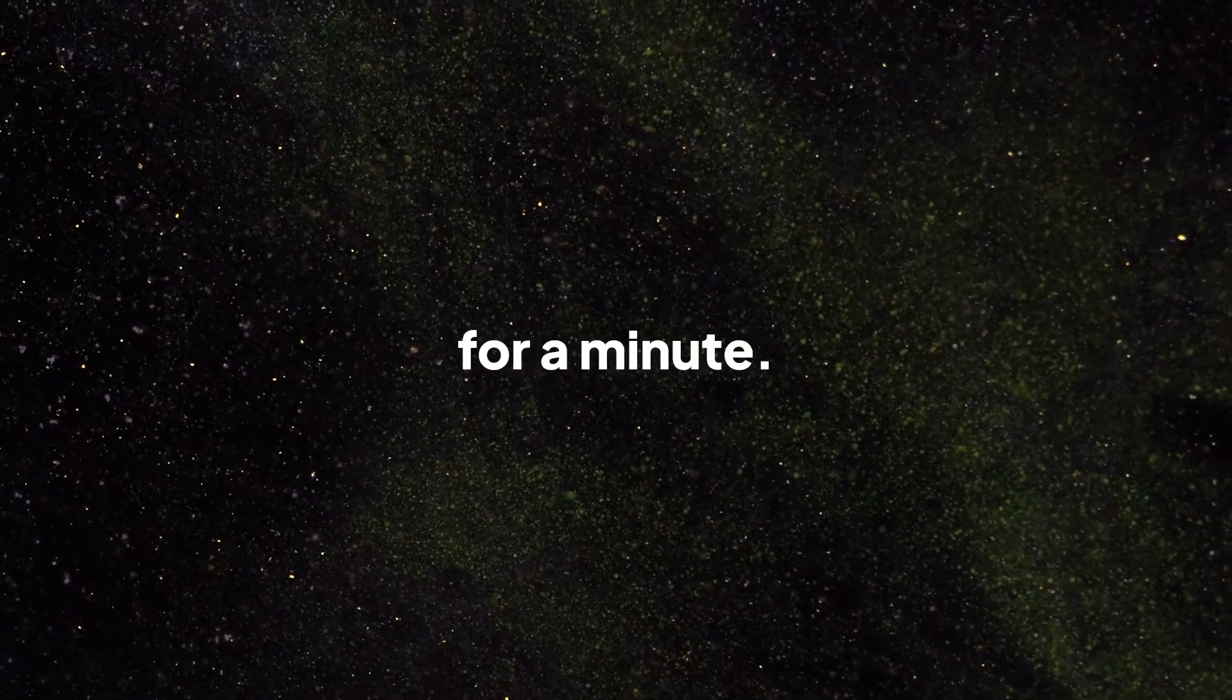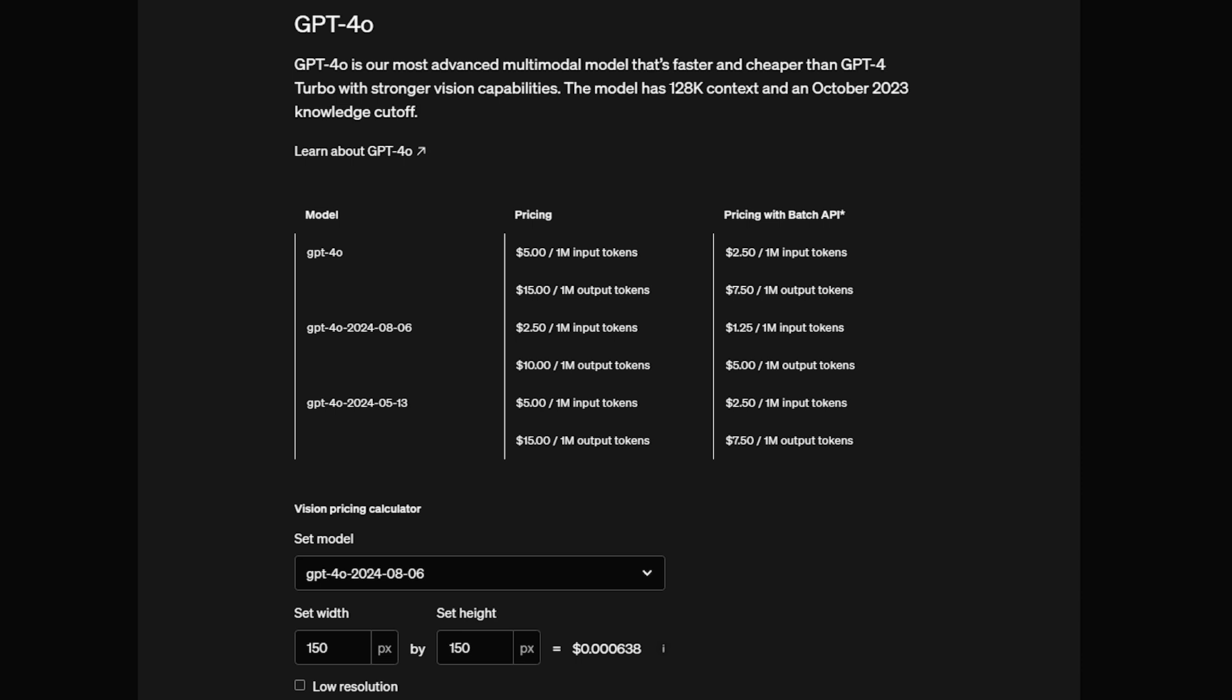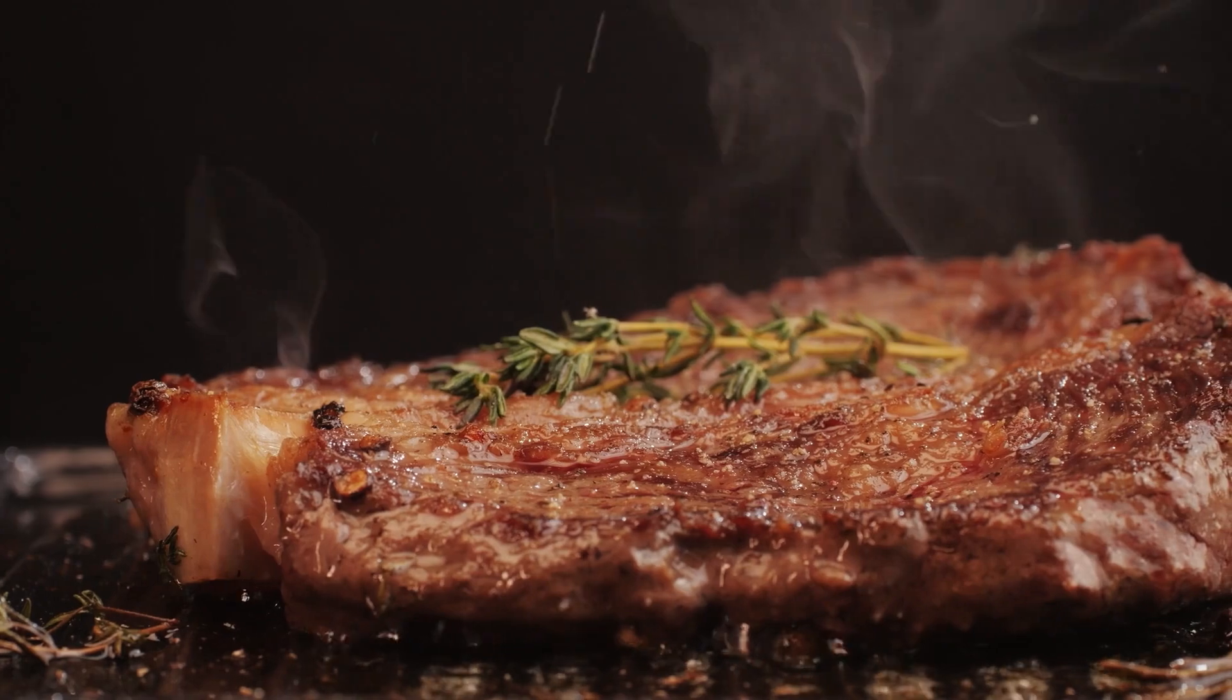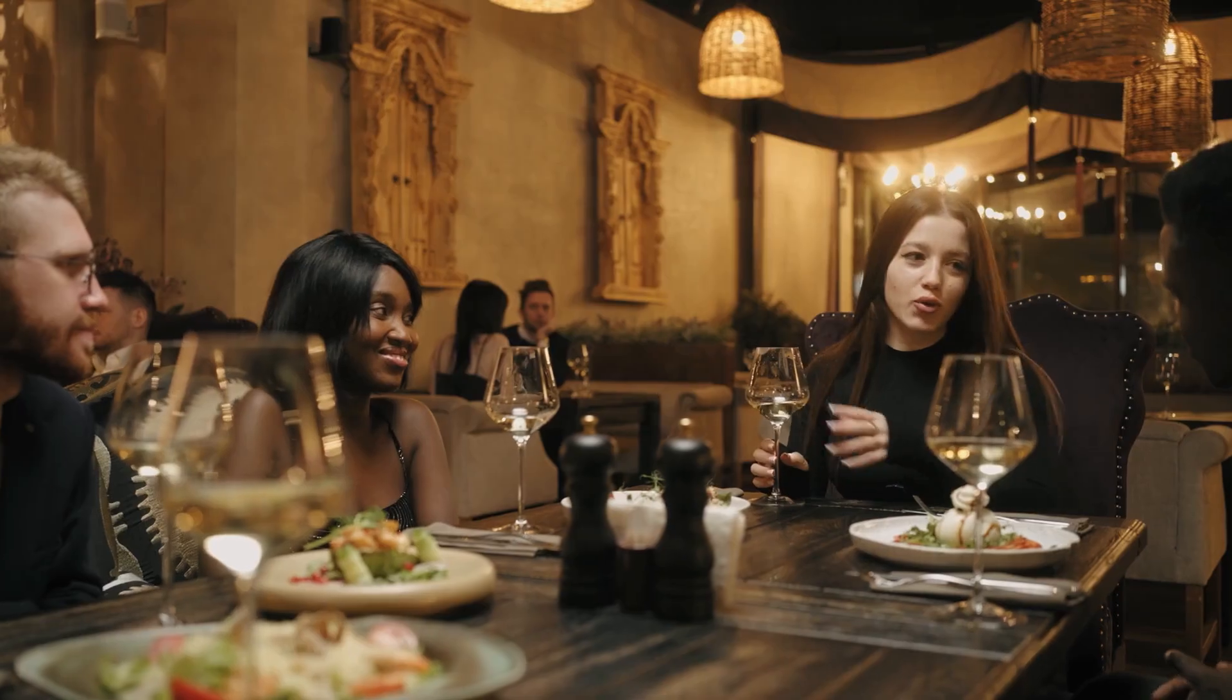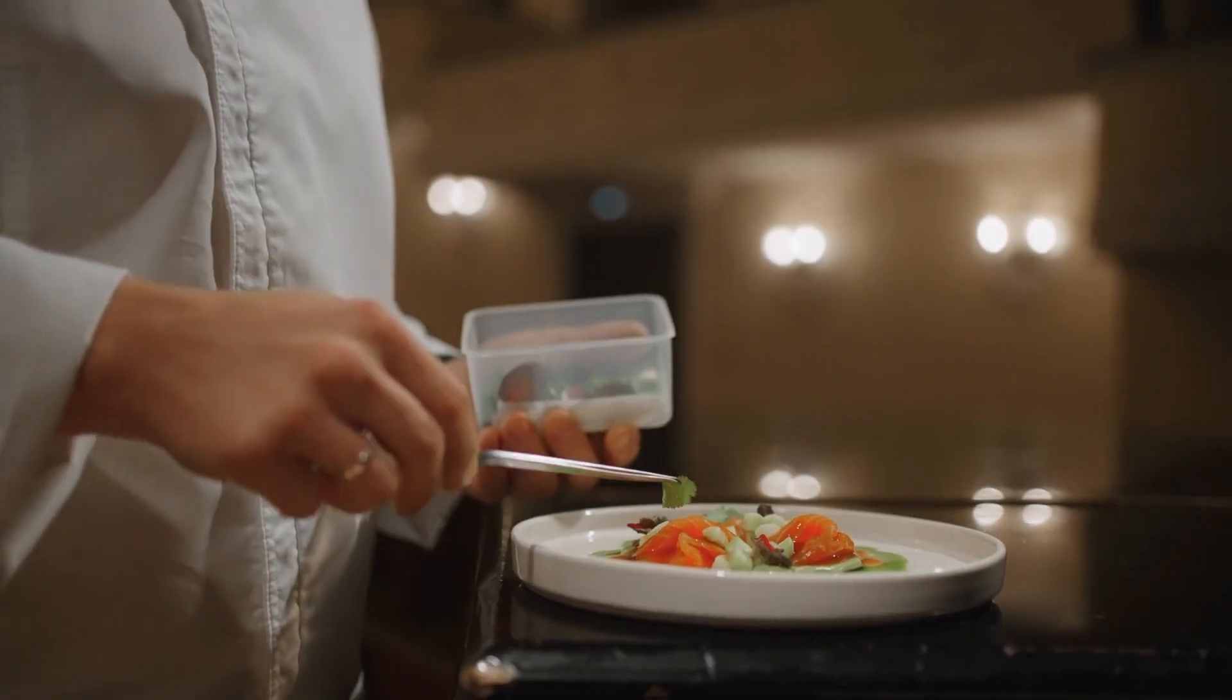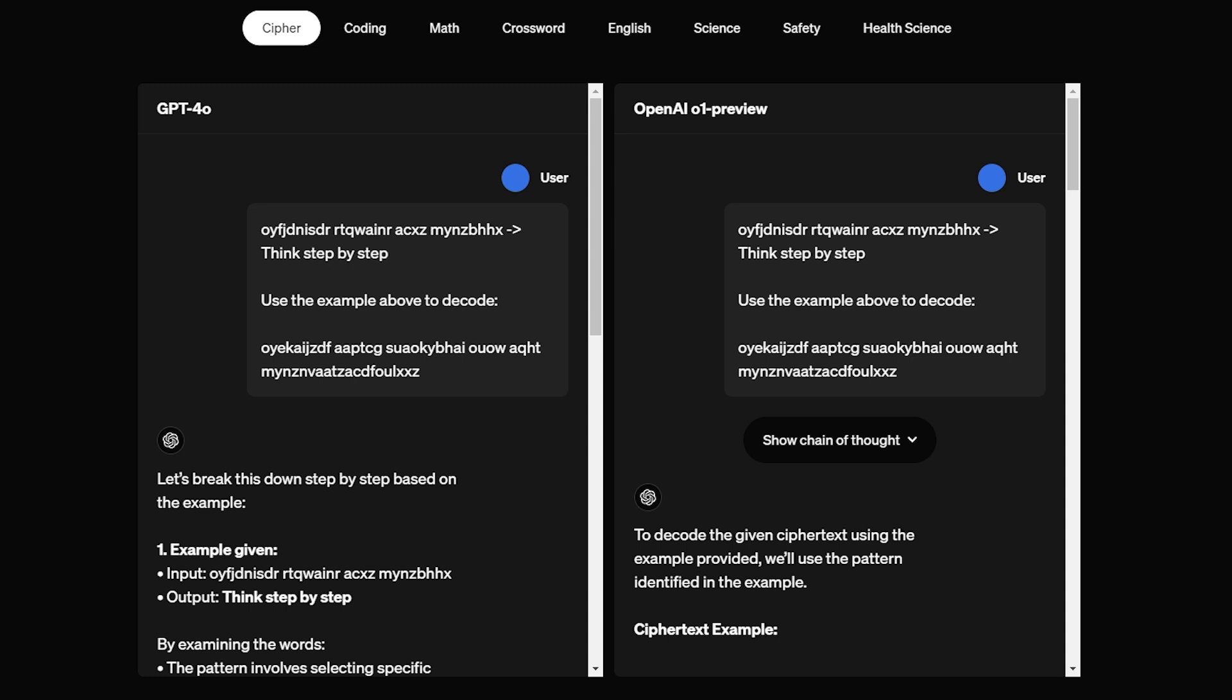Let's talk about the cost for a minute. There's no denying that GPT-01 comes with a price tag: $15 per million input tokens and $60 per million output tokens. Compare that to GPT-40, and yeah, GPT-01 is more expensive. It's like comparing a fast food meal to a Michelin star restaurant. Fast food is quick, cheap, and fills you up. But a Michelin star meal? That's an experience. You're paying for quality, for the thought and care that went into every dish. And GPT-01 is the AI equivalent of that.